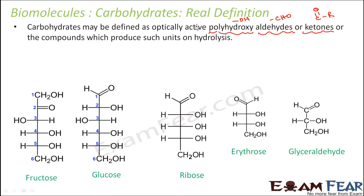These are compounds which have multiple OH groups and either an aldehyde (CHO) or a ketone group (CO with an alkyl group R), or they produce such units on hydrolysis. Hydrolysis means adding water, which results in other compounds. Examples of carbohydrates include fructose, glucose, ribose, erythrose, and glyceraldehyde.